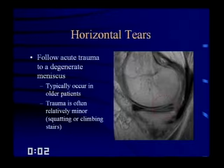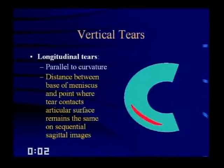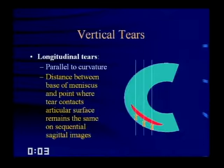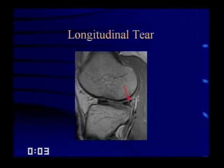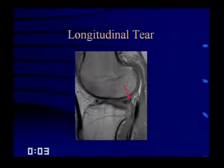Longitudinal tears are a type of vertical tear that run parallel to the curvature of the meniscus. The key to recognizing these is that the distance between the base of the meniscus and the point at which the tear contacts the articular surface remains the same on sequential sagittal images. Here's an example of a longitudinal tear of the posterior horn — you can see it on successive slices, same distance from the base of the meniscus, paralleling that curvature.